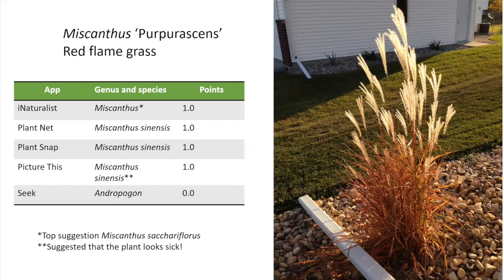Now for grasses: Miscanthus purpurascens, red flame grass, very popular here in North Dakota for its fall coloration. This was a tough one — the photo is backlit by the sun, it's showing fall coloration, and the plant is a hybrid between Miscanthus sacchariflorus and Miscanthus sinensis. I predetermined I would give a full point if the apps identified either parent species. PlantNet, PlantSnap, and PictureThis identified Miscanthus sinensis. iNaturalist suggested Miscanthus sacchariflorus. So all four of those got points. Seek suggested big bluestem, which is erroneous.